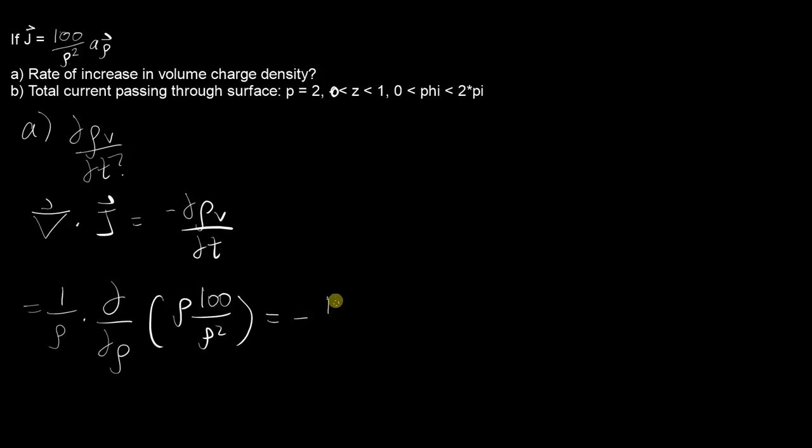So because this is equal to the negative of the rate of increase in volume charge density rho_v, we can say that our answer to part a is just the opposite sign of this, which is 100 over rho cubed.